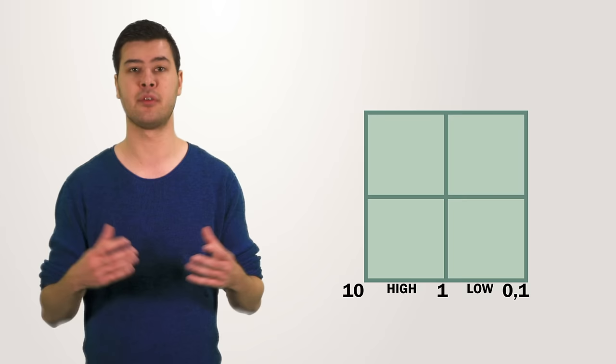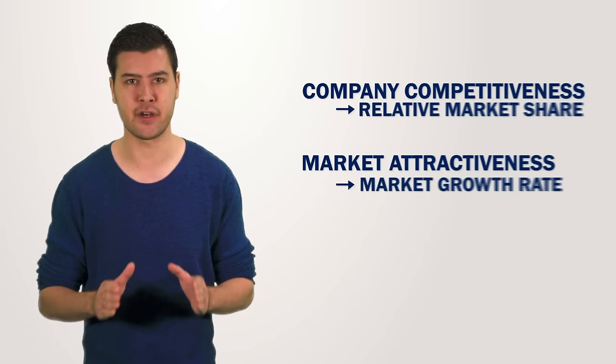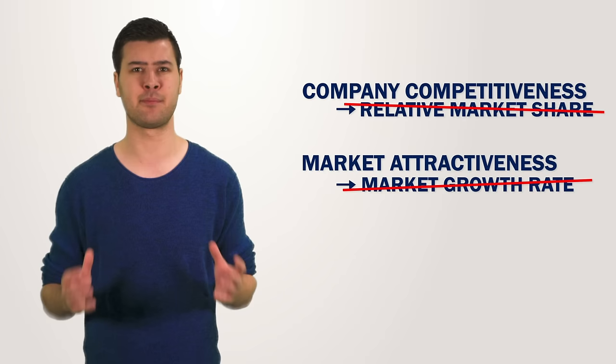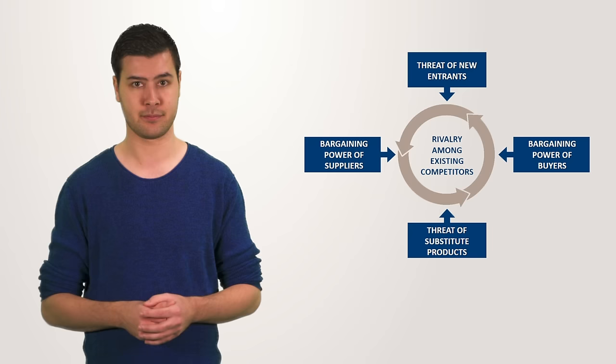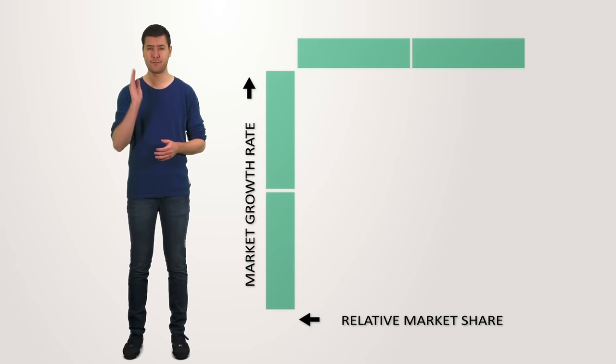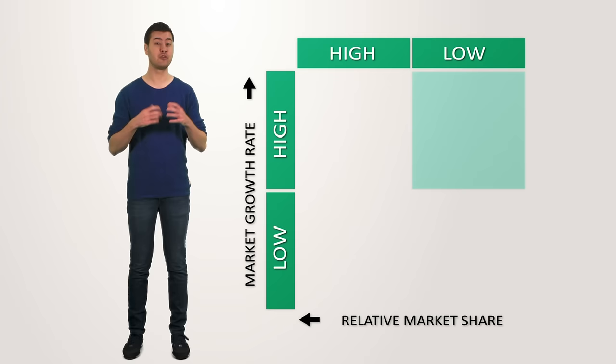It must be said that these two variables are not enough to measure the factors given the current times. There are more things that make a market attractive besides the growth rate, and there are other forces that determine the competitiveness of a company as we have seen in our previous video on Porter's five forces. I included a link to that video in the description if you want to know more about that. If we combine both factors by putting one on the horizontal axis and one on the vertical axis and divide them into high and low, we get a two by two matrix like this, the BCG matrix.